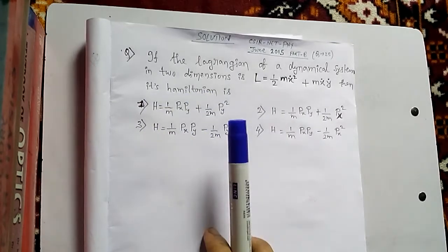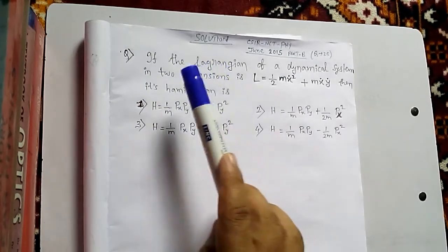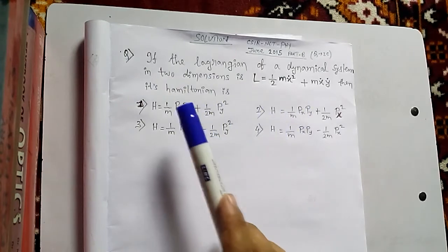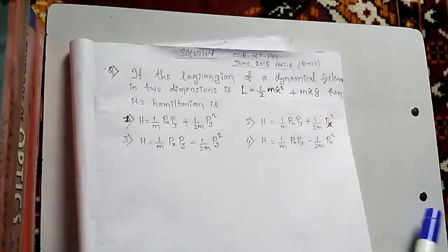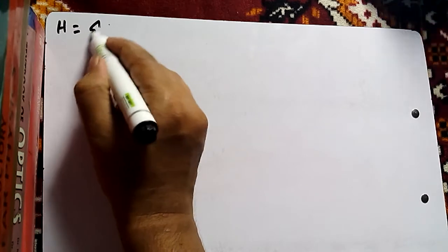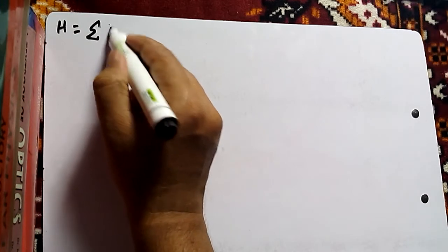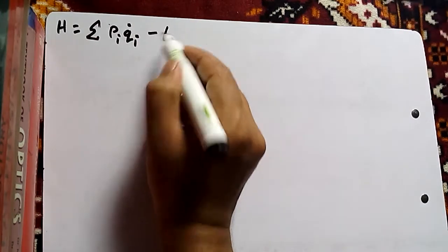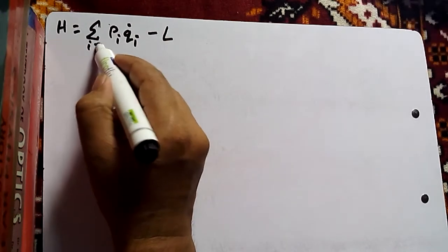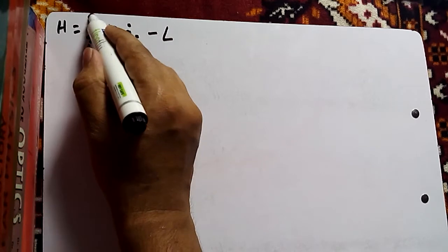Then what is the Hamiltonian? Since the Lagrangian is two-dimensional, the Hamiltonian that we are going to get is also two-dimensional. We have the formula for the two-dimensional Hamiltonian: H equals the summation of P_i Q_i-dot minus L, where i goes from 1 to 2.